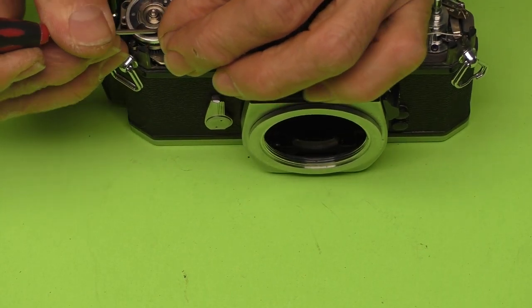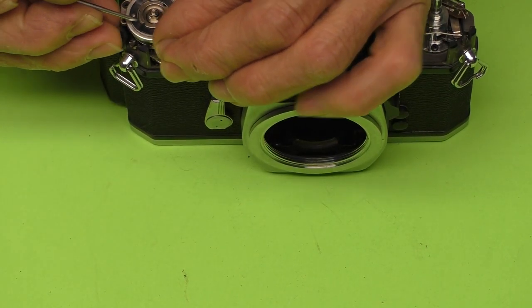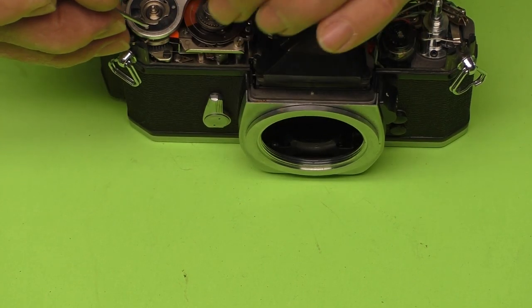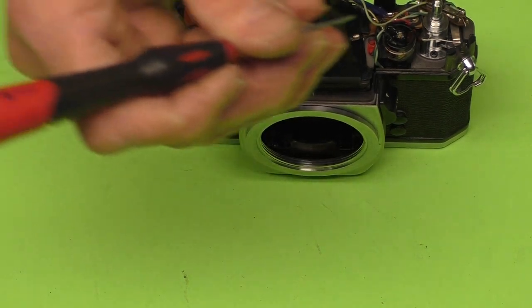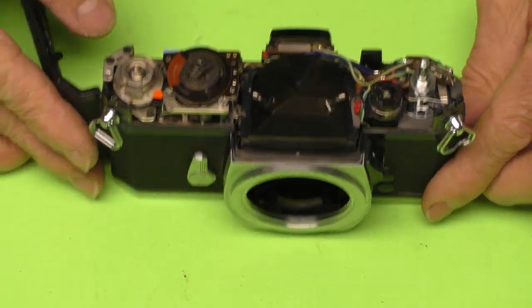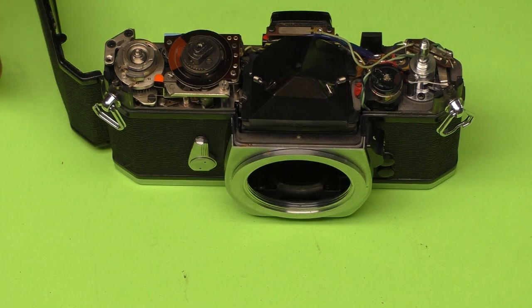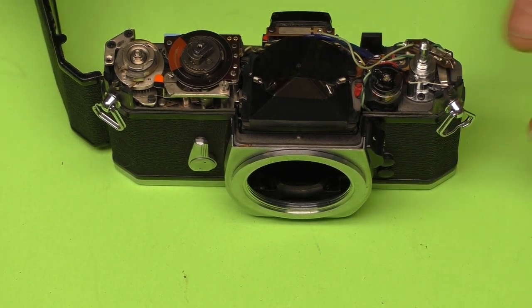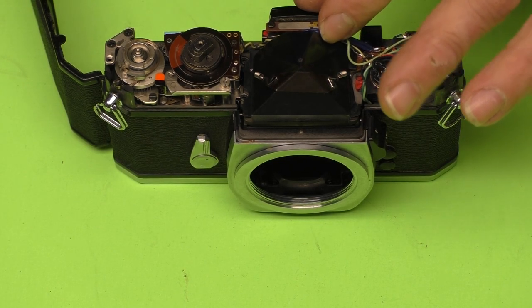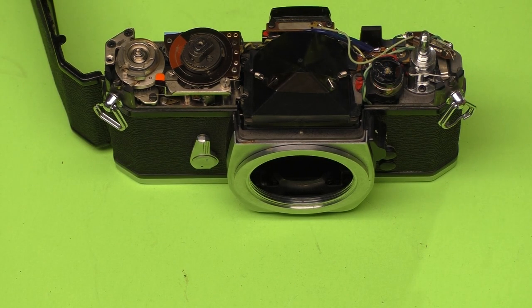I think we've got everything covered that we need to, so we can take the film advance lever back off. And basically the reverse of everything we did in the beginning, and along the way back, I'm going to clean up all the parts. So, let's go ahead and jump forward to it's all done, and you don't have to put up with all this boring turning of screws and whatnot.